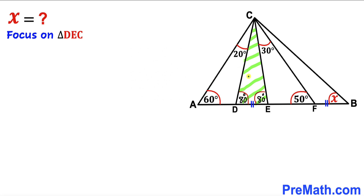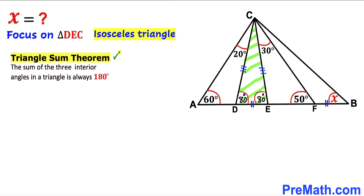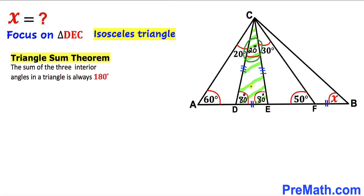Next, let's focus on triangle DEC. We can see that two of its angles are congruent — both 80 degrees — so this is an isosceles triangle. Therefore side CE equals side CD. Applying the triangle sum theorem to triangle DEC, the third angle must be 20 degrees, so all three angles add up to 180 degrees.